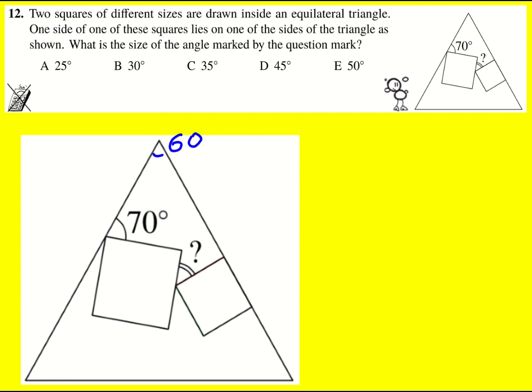And then we're told that we're basically putting squares, well we've got the 70, and this square is fixed to the side so that must be 90.